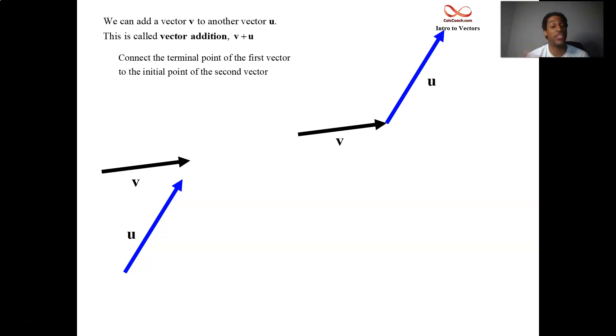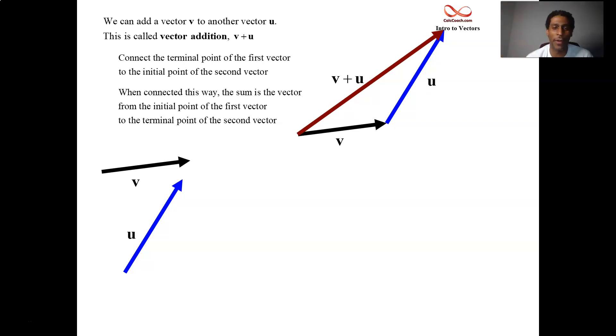That's not the end of the story. It's just the start. All right. When connected in this way, all right, then the sum vector, V plus U, goes from the initial point of the first vector to the terminal point of the second vector. You've just added two vectors geometrically. Good job.